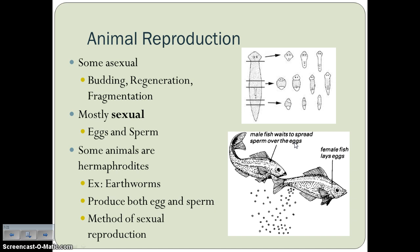Most animals reproduce sexually, but some do reproduce asexually. Sexual reproduction is the production of egg and sperm that have to be joined during fertilization. The animals that reproduce asexually most often go through three processes: budding, regeneration, or fragmentation. For example, with regeneration, like this flatworm in the picture — you can chop it up several different ways and all of those parts will regenerate into new flatworms, each genetically identical to the original parent.